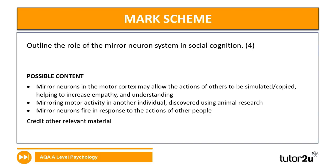The four-marker: outline the role of the mirror neuron system in social cognition. This is marked in levels for four marks. Key content: mirror neurons in the motor cortex may allow the actions of others to be simulated and copied, helping to increase empathy and understanding, mirroring motor activity in another individual — discovered using animal research. Mirror neurons fire in response to the actions of other people. The key word is role, which is slightly different from just describing the system — we really want to know its purpose.